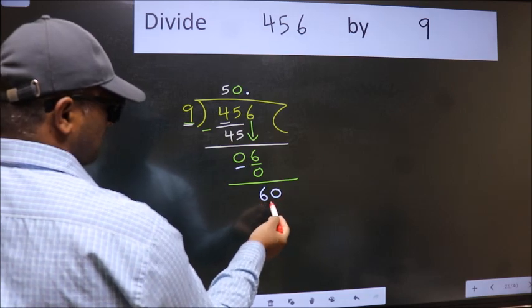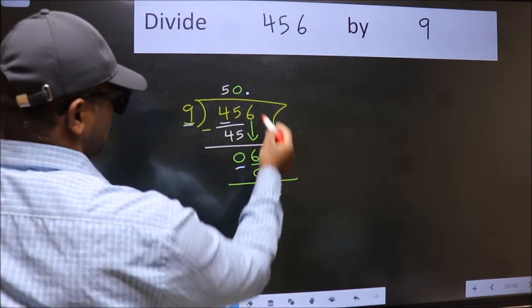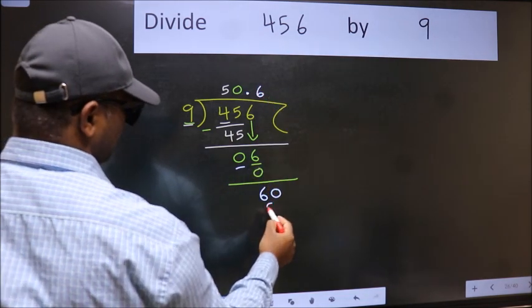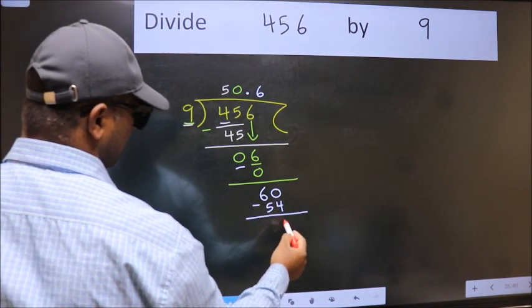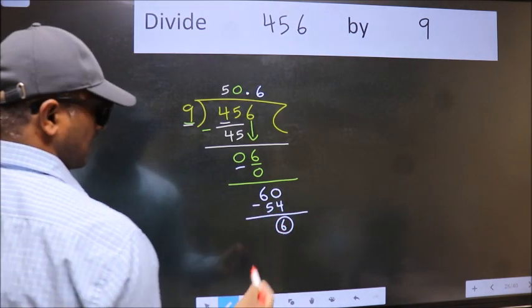So now we can put dot and take 0. So 60. A number close to 60 in 9 table is 9, 6, 54. Now we subtract. We got 6 again.